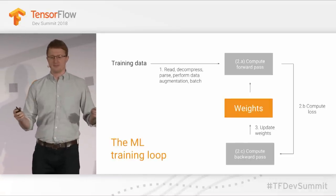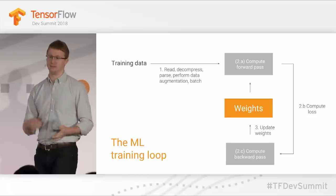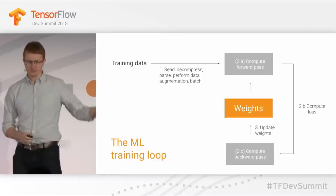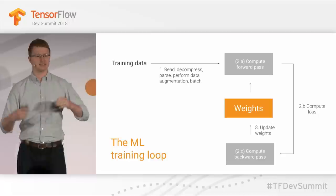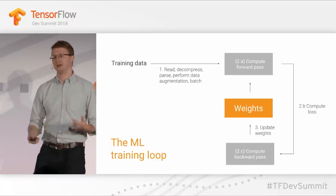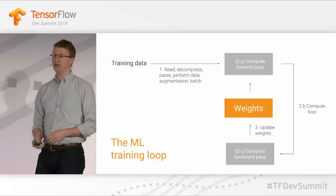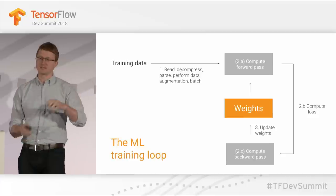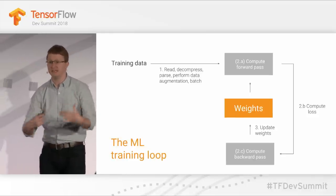In a nutshell, the machine learning training loop across a wide variety of models looks roughly as follows. You have your training data and you need to load it in — this is phase one. You read it from disk or generate it from a reinforcement learning environment, decompress it, parse it, perform image augmentations like random flips and color distortions if doing an image model, and batch it up to feed into your model.